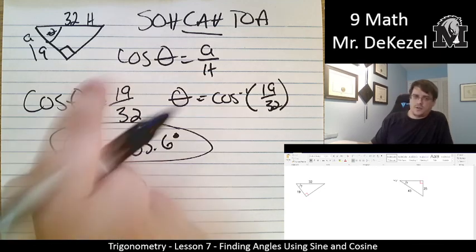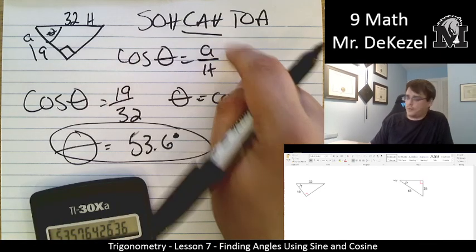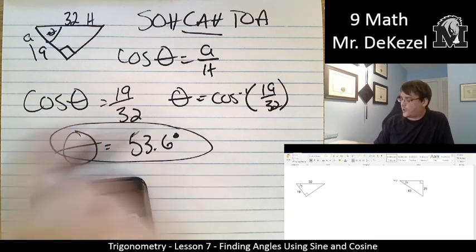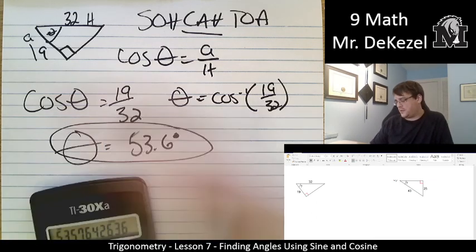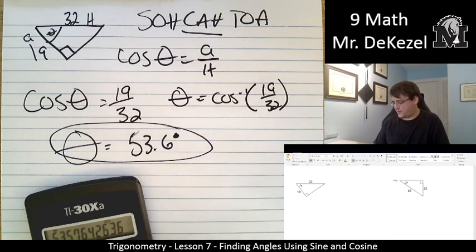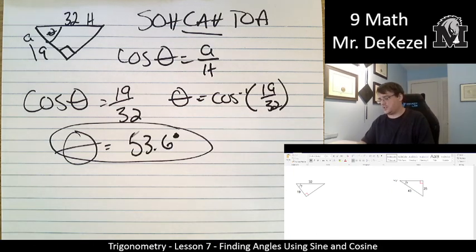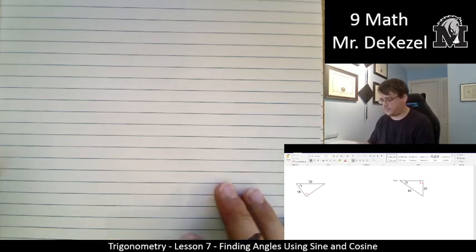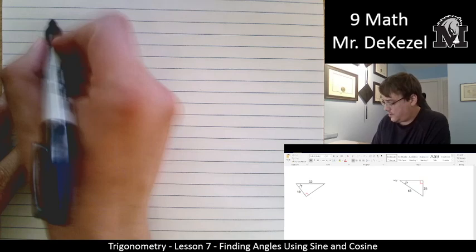So, we picked out which trigonometric ratio to use. We wrote out the equation, and we filled in what we knew. We then moved the cosine over to the other side, which means we had to inverse cosine. And we did the fraction, and we found out what our degrees would be. Let's do last one. Last one.